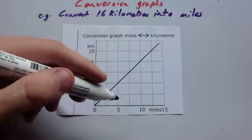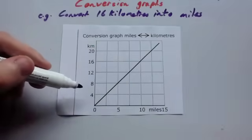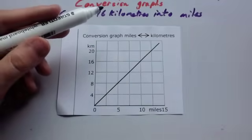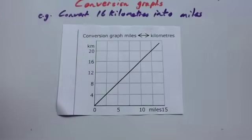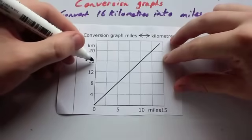So again, what you do is you look at the axis. The x-axis is miles and the y-axis represents kilometers. And this time we're looking for 16 kilometers. So you go to your graph and you identify where 16 kilometers would be. So 16 kilometers on the vertical axis is here.